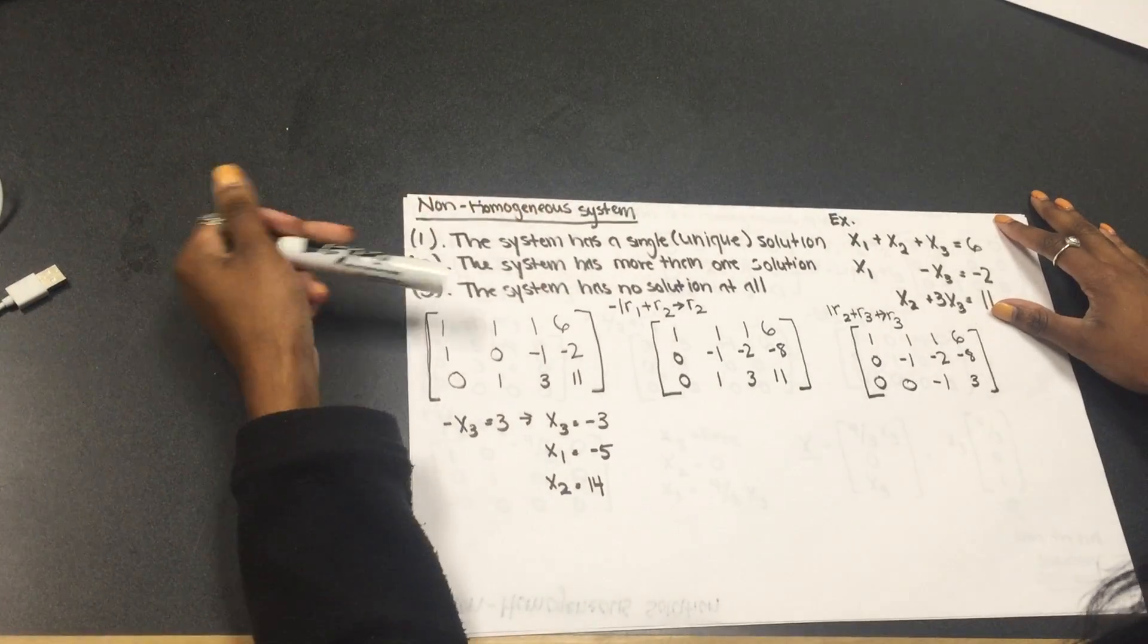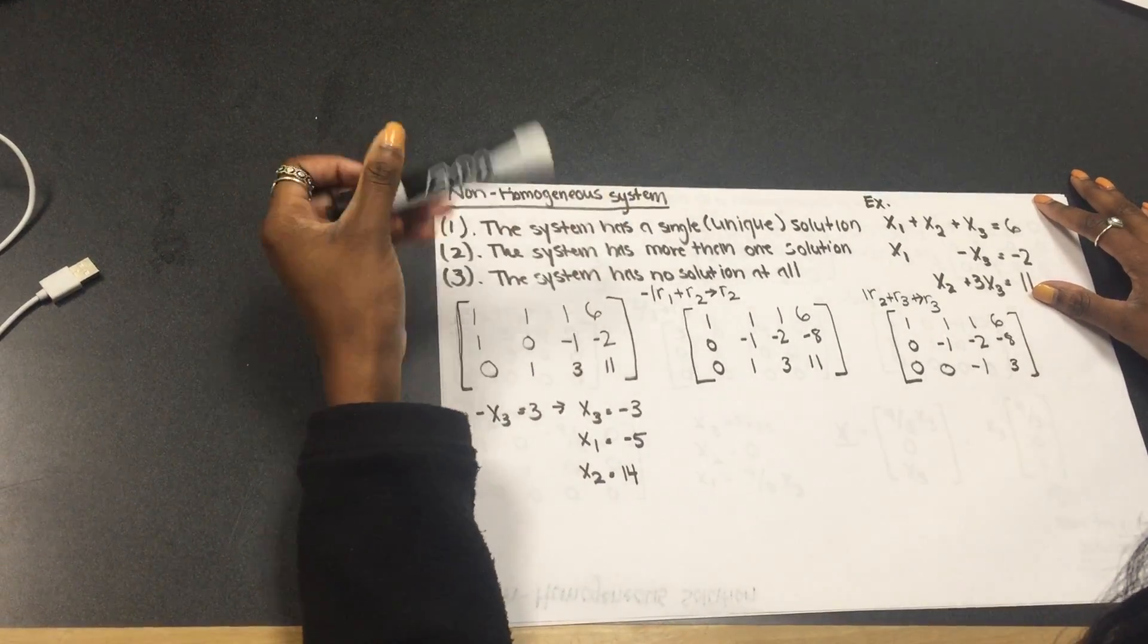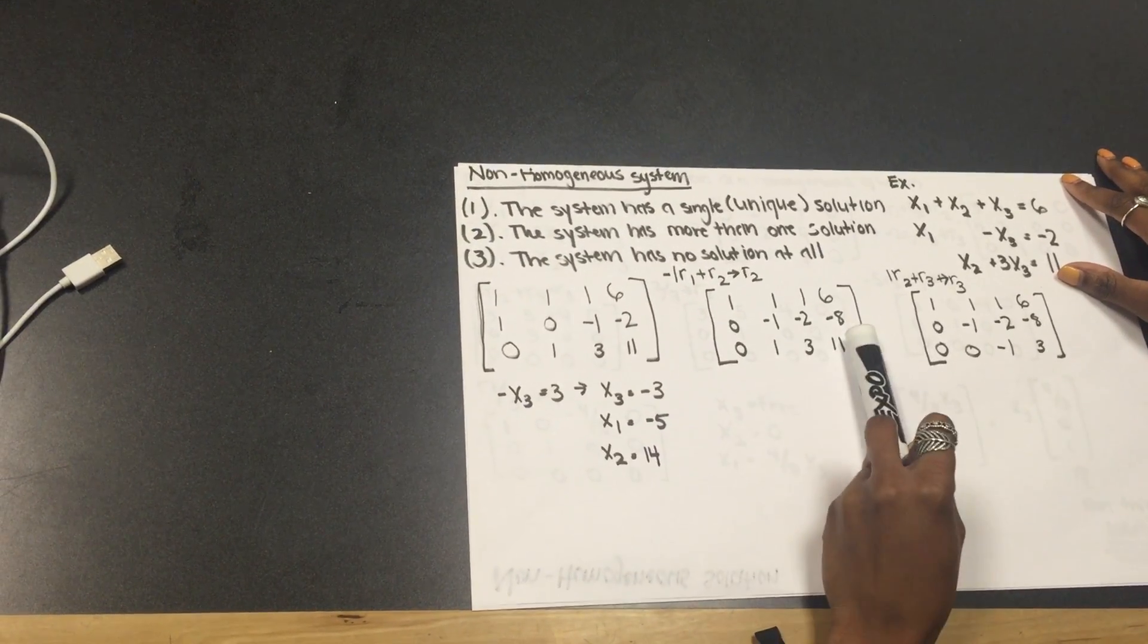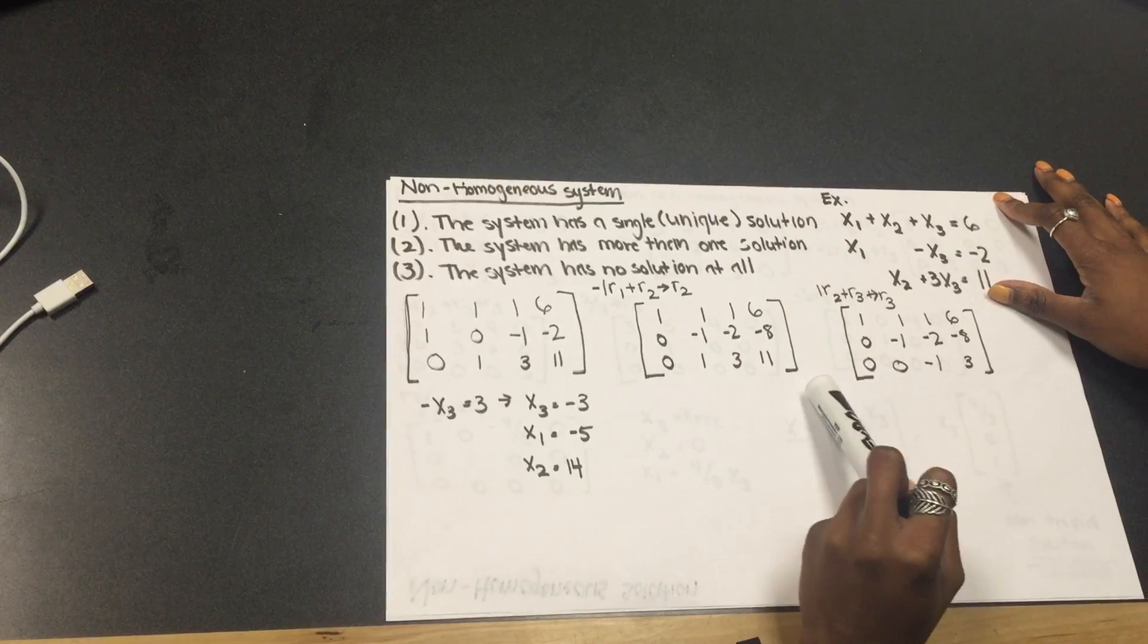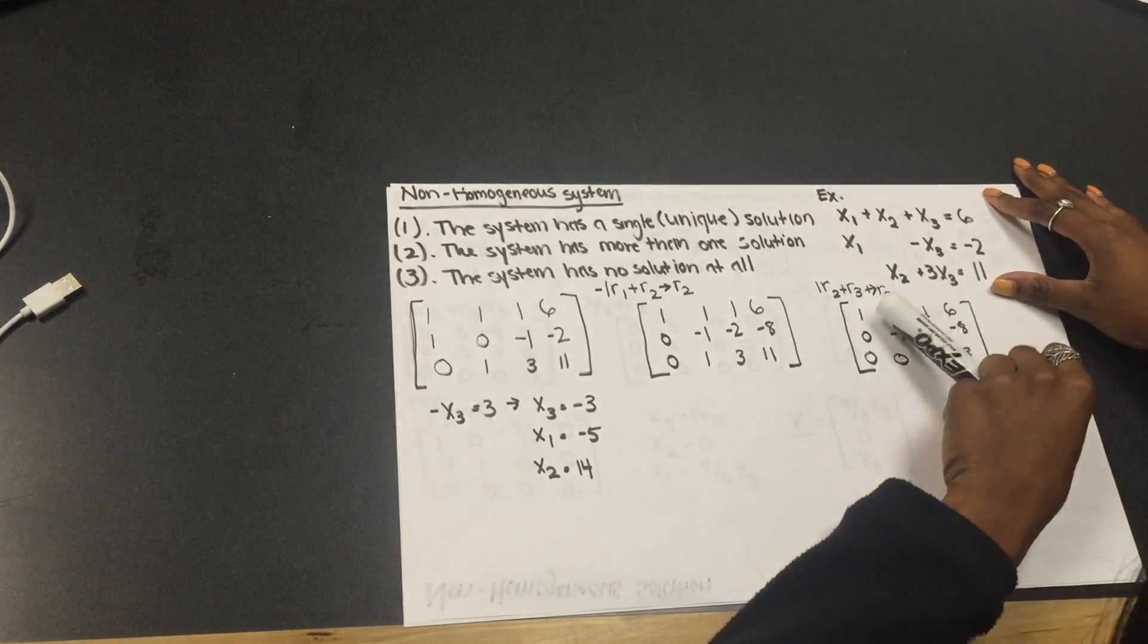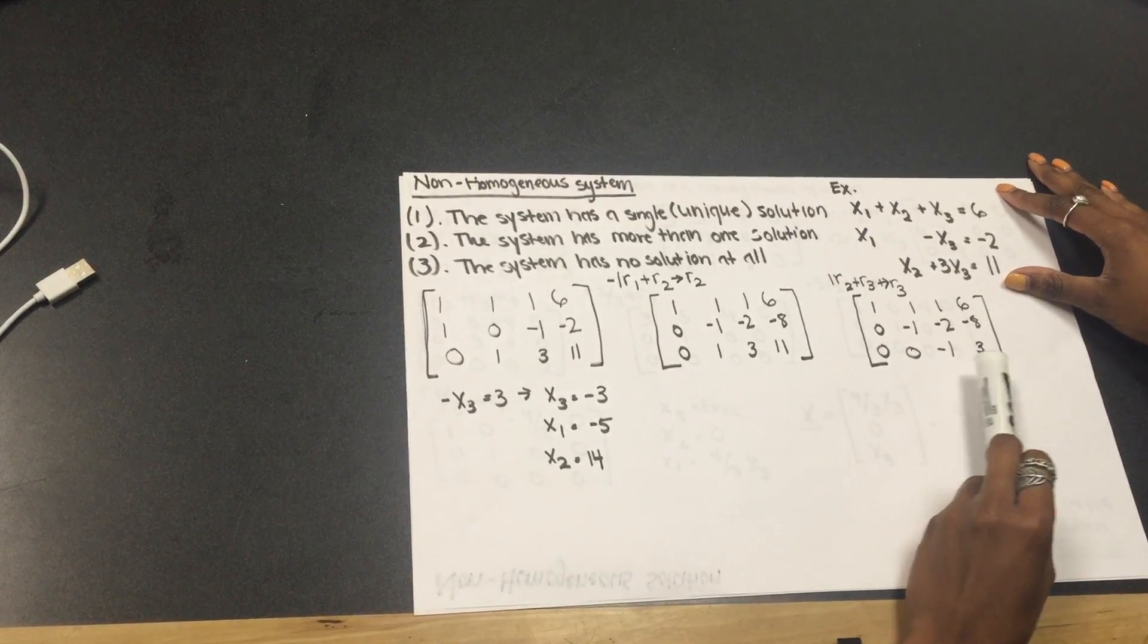So, the first row operation we did is negative one times row one plus row two, and we put that into row two. And that's how we get this, zero, negative one, negative two, negative eight. And then we do, we take this one, and then we do one times row two plus row three, and we put that into row three. And we get zero, zero, negative one, negative three.